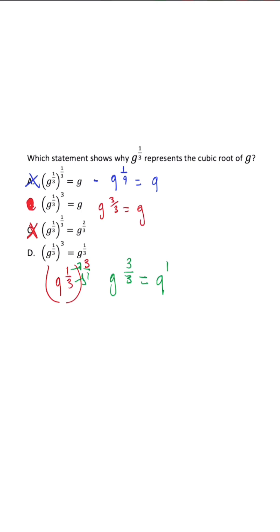Getting g to the one-third means that they incorrectly used their exponent rules. And this is why the answer choice is going to be B.